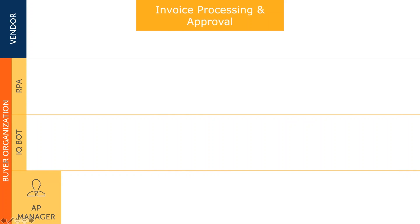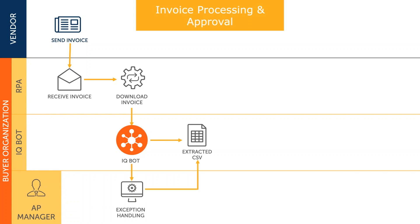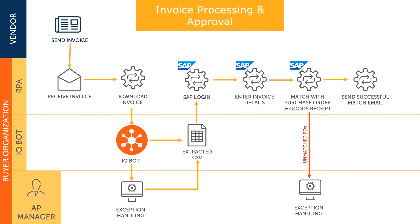With RPA, new invoice documents are immediately downloaded from incoming emails. These new invoices are then uploaded to IQBot for processing. IQBot extracts the data on the invoice into structured CSV format. RPA can then log into the ERP system — in this case SAP — and use the formatted data to enter all of the required information for the invoice without human intervention.